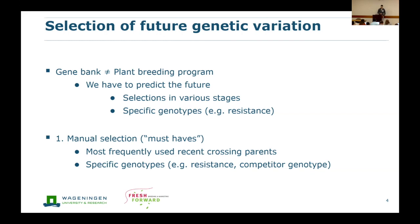We selected the most frequently used recent crossing parents because they represent the future variation best, and we selected some specific genotypes which, according to the breeder, are going to become important or have important genetic variation for the future.